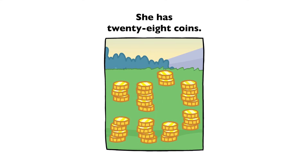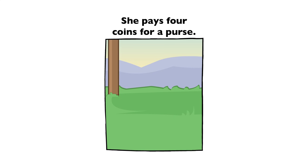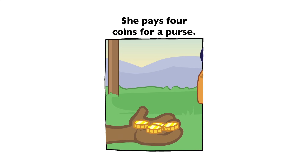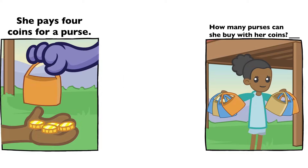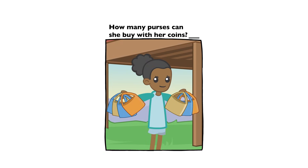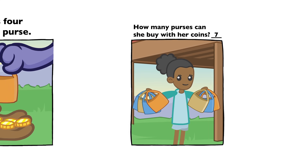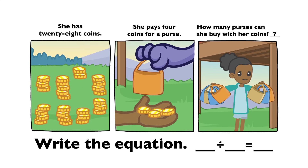She has 28 coins. She pays 4 coins for a purse. How many purses can she buy with her coins? Seven. 28 divided by 4 equals 7.